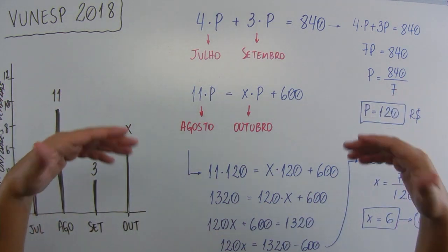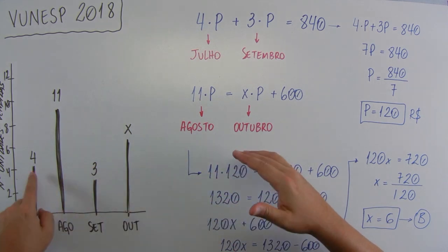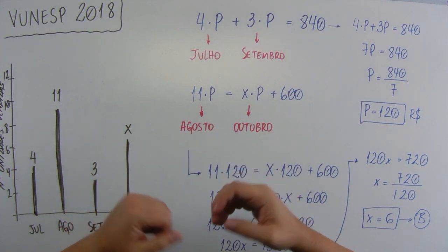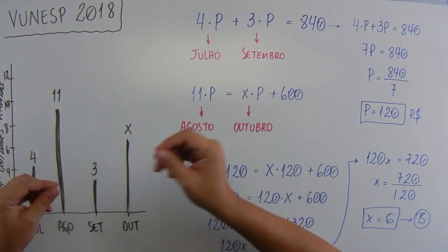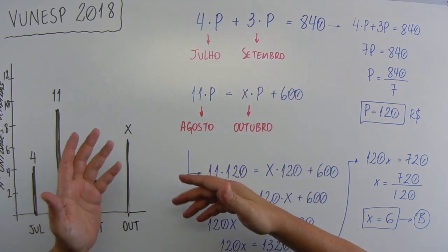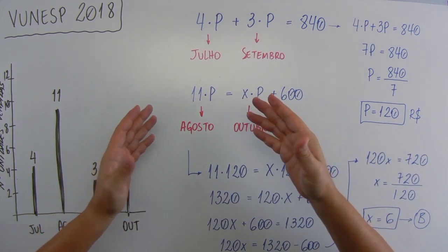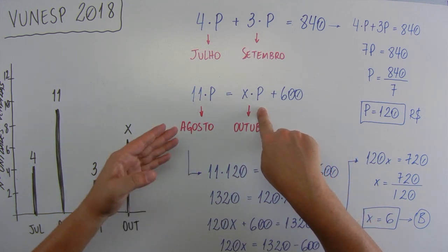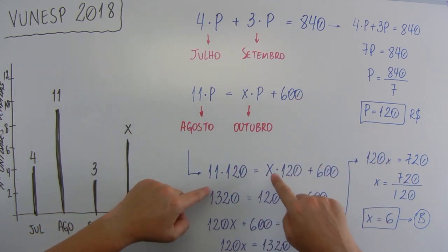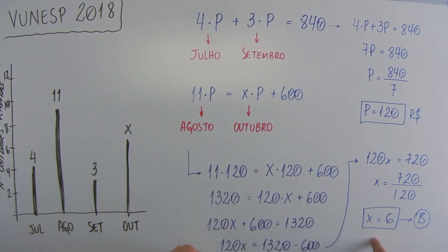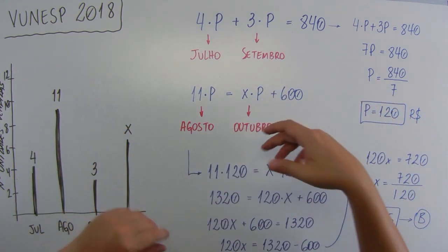Espero que você tenha entendido essa questão. O mais difícil é entender o enunciado e saber que o produto é o mesmo preço para todos os meses. O que vai mudar é a quantidade de produtos vendidos. A gente somou os valores de julho e setembro do produto. Foram 7 produtos e o total arrecadado 840. Em agosto, ele foi 600 reais a mais do que outubro. A gente sabe que cada produto é 120. Substituímos aqui, achamos o valor individual do produto e encontrou X. Se você se perdeu em algum lugar, volta o vídeo e vai anotando devagarzinho.